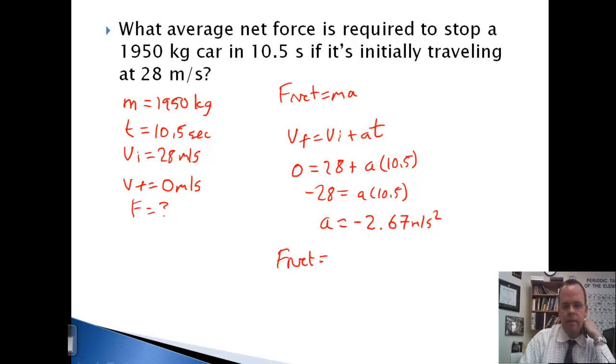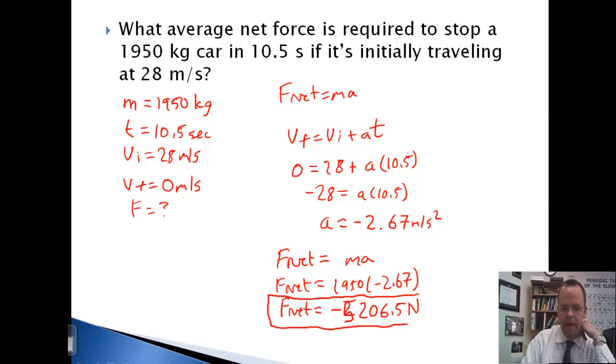So now I can do F net equals MA. F net equals 1950 times negative 2.67. This comes out to negative 5,206.5 newtons.